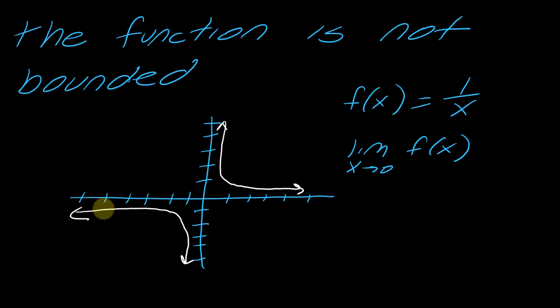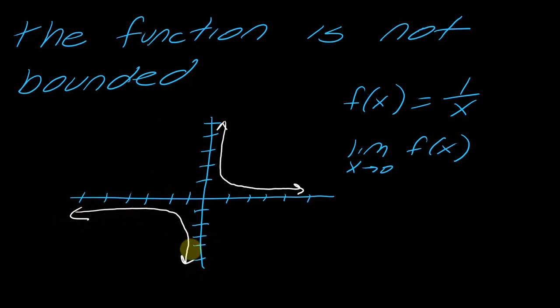It's a very similar idea to the last one — it's not approaching some uniform value. If I'm on the right side, this function is just getting bigger and bigger and bigger forever. But if I'm on the left side, it's just getting smaller and smaller and more and more negative. So these are once again approaching two different values. More formally, we'd say the function is not bounded, and so once again this limit does not exist.